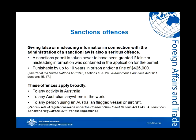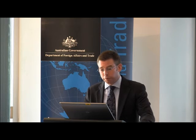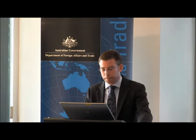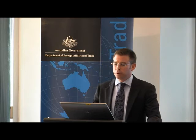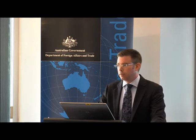Giving false or misleading information in connection with the administration of a sanctions law is also a serious criminal offence. Importantly, a sanctions permit is taken never to have been granted if false or misleading information was contained in the application — meaning any trades undertaken relying on that permit would very likely constitute offences themselves. This offence is also punishable by up to 10 years in prison and/or a fine of $425,000. These offences apply broadly — to any activity in Australia, to any Australian anywhere in the world, and to any person using an Australian-flagged vessel or aircraft.